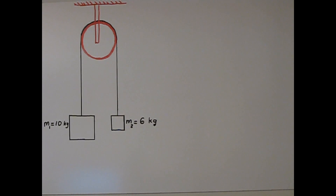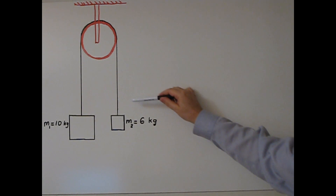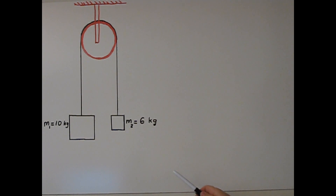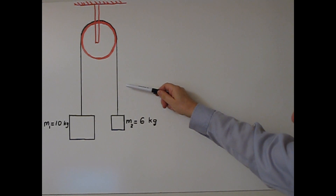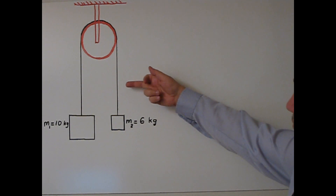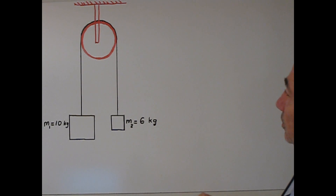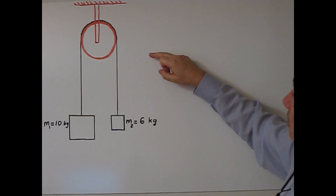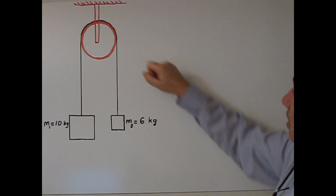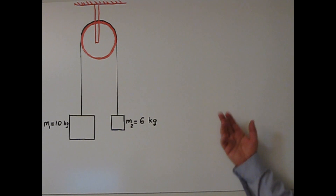I am going to talk about pulleys. Let's say we have two masses, 10 kg and 6 kg, attached by a string. This is a taut string — it is not stretchable. We assume the mass of the string is 0, so we ignore the mass of the string. We put this string over a horizontal bar, and we also assume that friction between the string and bar is negligible — essentially 0.